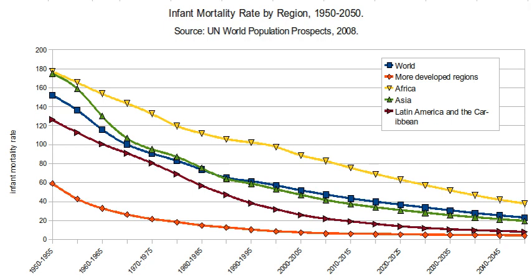Current efforts from NGOs and governments are focused on developing human resources, strengthening health information systems, and improving health services delivery. Improvements in such areas have increased regional health systems and aided efforts to reduce mortality rates.